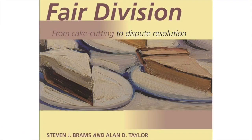For four or more cake cutters, envy-free solutions are very complex and can take arbitrarily long to resolve. However, a general solution of the problem of fair, envy-free division was eventually found in 1992 by the Americans Steven Brahms, a political scientist at New York University, and Alan Taylor, a mathematician at Union College in Schenectady, New York.